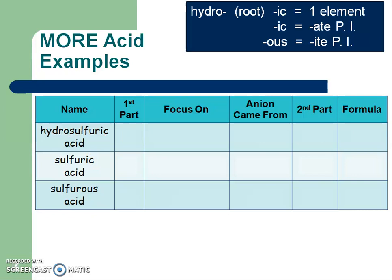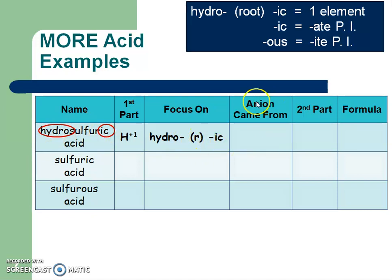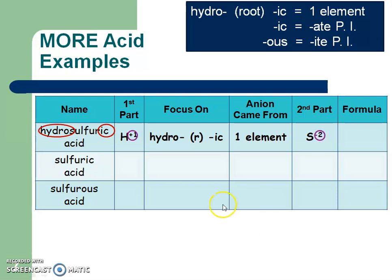Hydrosulfuric acid. First part, since it says acid, is H plus 1. Looking at the name: hydro, root, ic — so the anion must be one element. Focusing on the root — sulfur — that comes from sulfur, which on my ion sheet is S with a negative 2 charge. Now treating this like an ionic compound, I look at those charge numbers: I have a 1 and a 2. Those are different, so I crisscross them, giving H2S. Note: since hydrogen is plus 1, you'll never have more than 1 of the anion part.